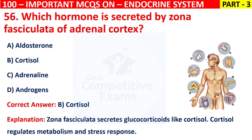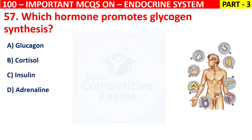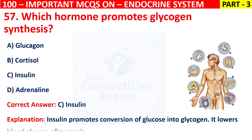Question 57: Which hormone promotes glycogen synthesis? Your options are Glucagon, Cortisol, Insulin, or Adrenaline. The correct answer is C, that is Insulin. Insulin promotes the conversion of glucose into glycogen. It lowers blood glucose after meals.